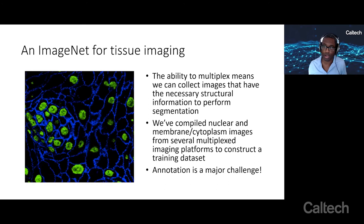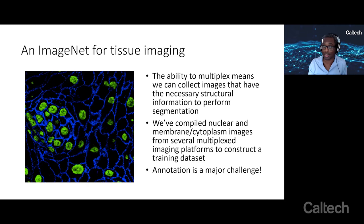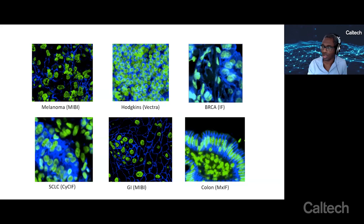We set out with Mike Angelo's lab at Stanford to solve the problem of doing both nuclear and whole-cell segmentation in tissue images using deep learning. The first thing we did was survey all the labs active in the space and asked them to contribute data from the different instruments and tissue types that they use. As we ingested each data set, we made sure each had both an adequate nuclear image and an adequate membrane or cytoplasmic image, since we need both to perform nuclear and whole-cell segmentation. Once we compiled this data set, the next major challenge was annotation — someone has to label literally every pixel in every image.